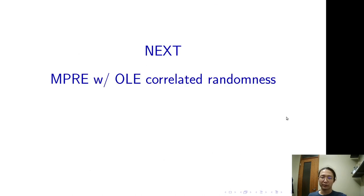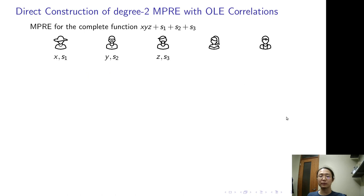Next, I will present our MPRE using OLE-correlated randomness. If you didn't get the last one, follow me from the next slide. I will start from scratch and the next one is even simpler. We would like to construct MPRE for this complete function XYZ plus some linear term.